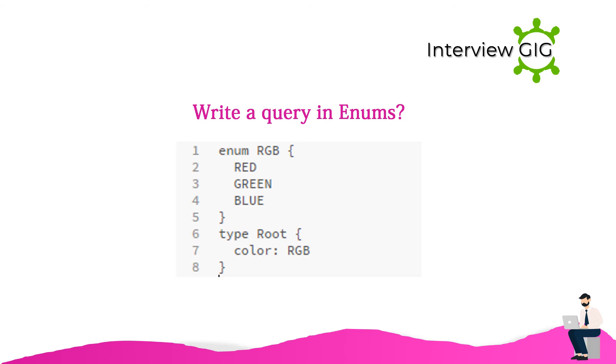Write a query using enums. Enum RGB { RED, GREEN, BLUE }. Type root { color: RGB }.